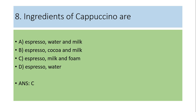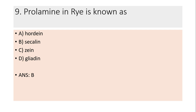Eighth question: Ingredients of cappuccino are — espresso, water and milk; espresso, cocoa and milk; espresso, milk and foam; or espresso and water? Answer is C: espresso, milk and foam.